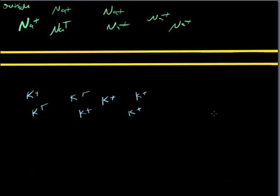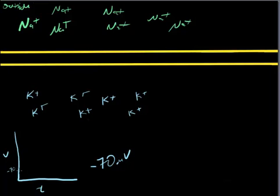factors, resulted in the inside of the cell having a charge of minus 70 millivolts. If we were going to graph that—here's time, here's voltage, here's minus 70—so we're hanging out about right there so far.